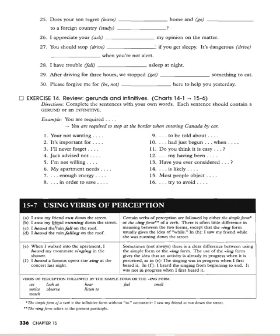Using verbs of perception: 'I saw my friend run down the street' / 'I saw my friend running down the street.' 'I heard the rain fall on the roof' / 'I heard the rain falling on the roof.' Certain verbs of perception can be followed by either the simple form or the -ing form. There is very often little difference in meaning: 'I saw my friend while she was running down the street' has the same meaning as 'I saw my friend running down the street.' All three versions mean the same thing.